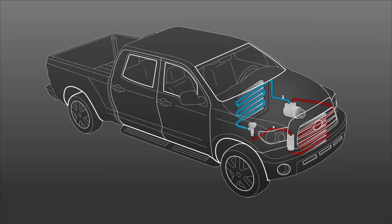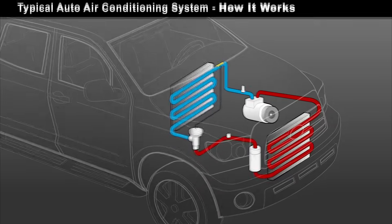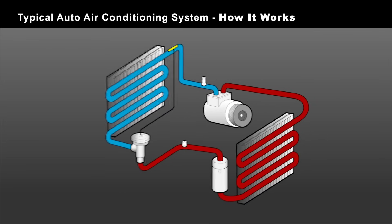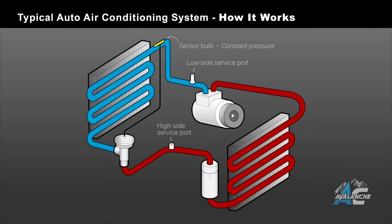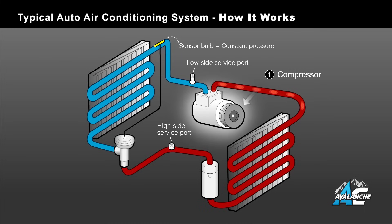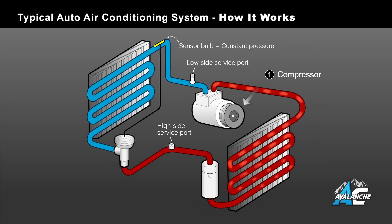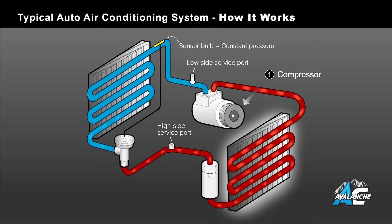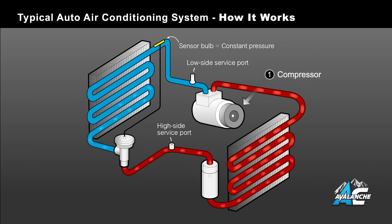We have designed a basic auto air conditioning system diagram to show you the flow of refrigerant throughout the AC system. The compressor is the workhorse of the system and is where we'll start. It receives cool, low-pressure gas, which is compressed into a high-pressure, high-temperature gas and pumped out of the discharge side of the compressor and flows into the condenser. This high-pressure, high-temperature gas is shown as red with bubbles, indicating it's in a gas state.